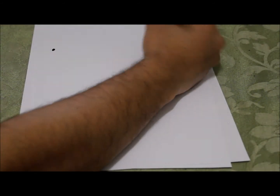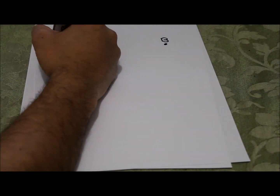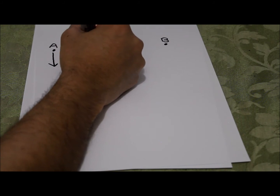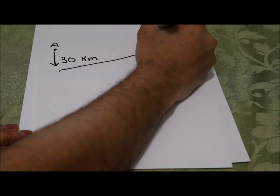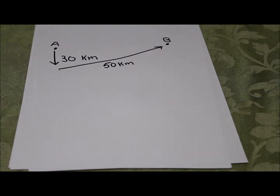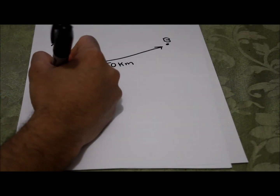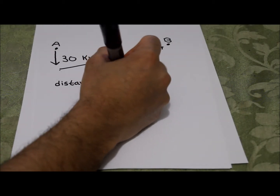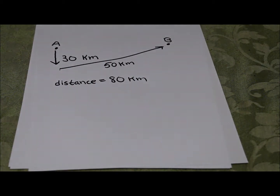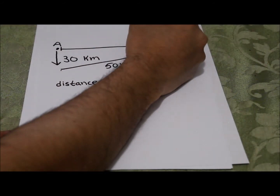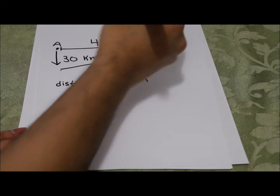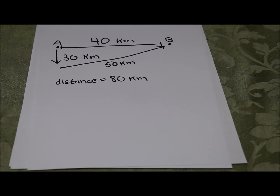Let's look at an example. If we're going from point A to point B, let's say the route you take is 30 kilometers south and then 50 kilometers northeast. The distance you travel is 50 plus 30, which is 80 kilometers. But if you're looking for the displacement — how far away are you from your start point — we're going to say that's 40 kilometers. So the displacement is only 40 kilometers, because you're only 40 kilometers away from your start point.